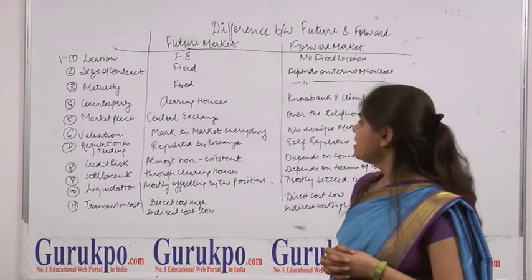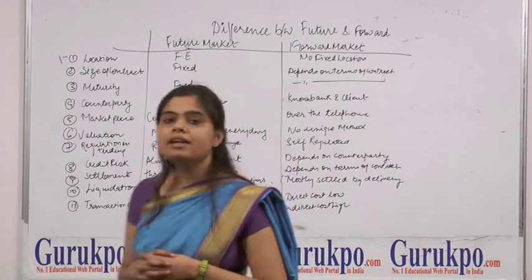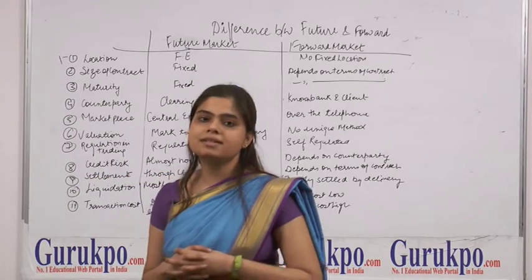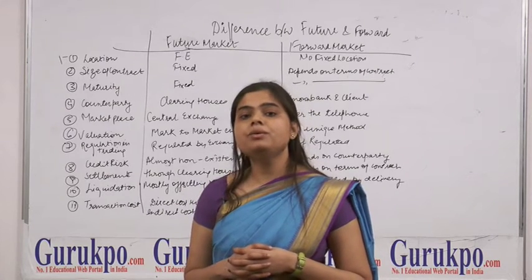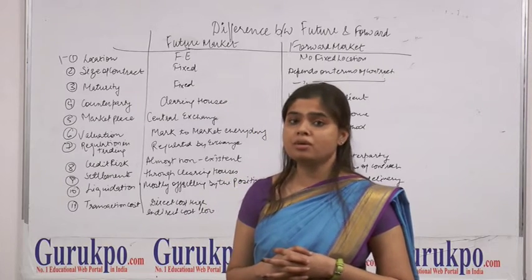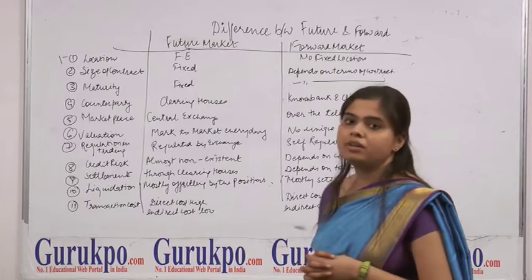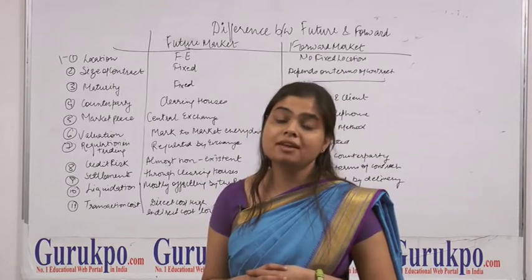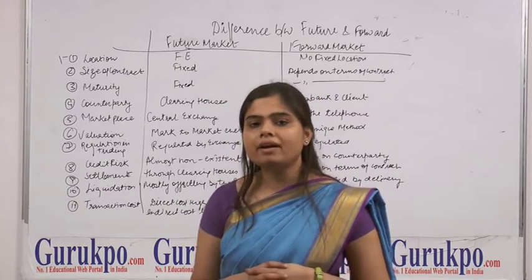The next difference is credit risk. In the futures market, there is almost no credit risk because the clearing house settles all transactions. In the forward market, it depends on the counterparty — if both parties are creditworthy, there is no risk; if they are not creditworthy, it creates risk in the market.